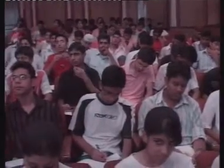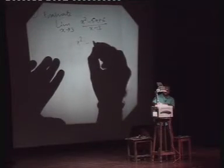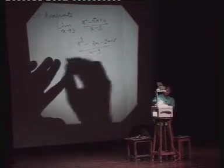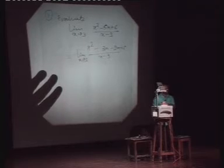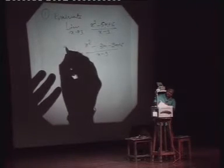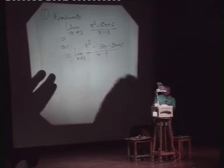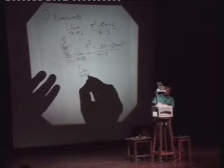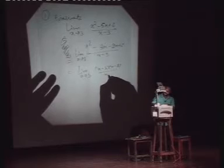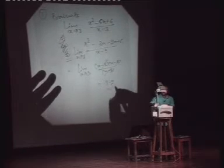Looking at the question: if we directly substitute the value, the answer doesn't come easily — we get a 0/0 form. So we will take some action. Can we split the middle term? Yes. Writing directly: x² minus 3x minus 2x plus 6 in the numerator, the denominator stays the same. Making factors — this factor is gone. What's the answer? The answer is 1. It's a limit equal to 1.